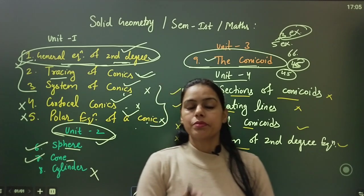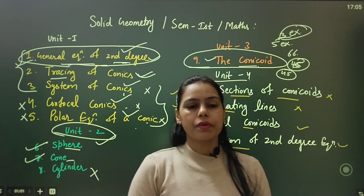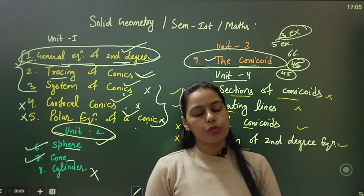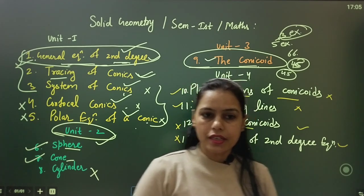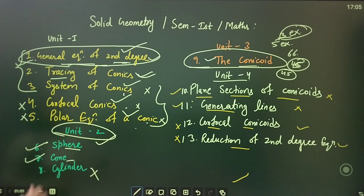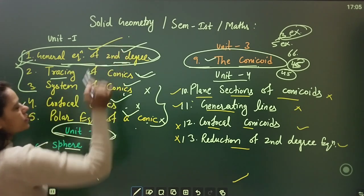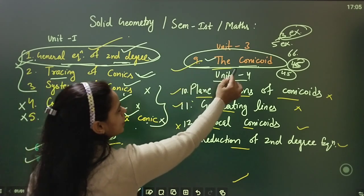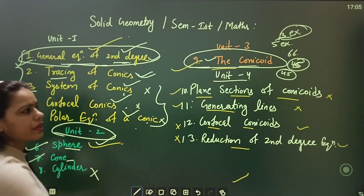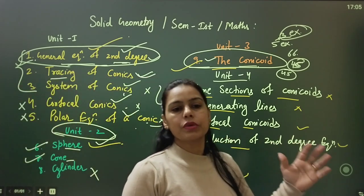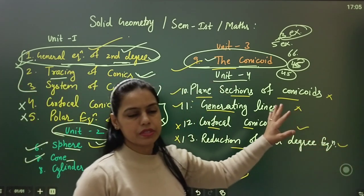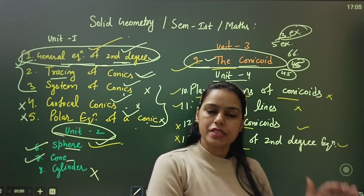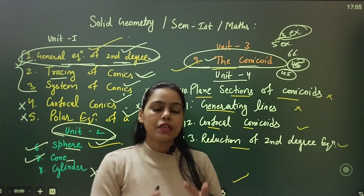Now let's talk about it. Three chapters — I'm telling you — from which you do well, you will crack 100%. Okay? But you have to do those chapters very well. Now understand: the first chapter is the general equation of second degree, one is sphere, and one is conicoid. For conicoid, I will not say that you will complete it — 70% of the chapter you have to do. If you do that, it is sufficient. The question will easily be covered. These three chapters are interconnected.